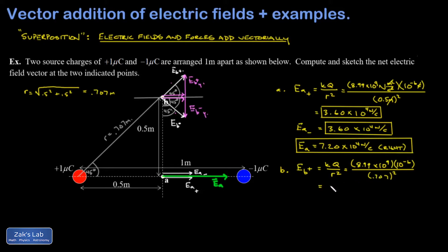And when I run the numbers, I get 1.80 times 10 to the 4th newtons per coulomb. Now remember, that's the magnitude of the electric field contribution from that plus charge. But in the end,